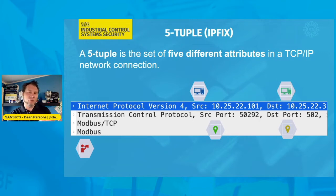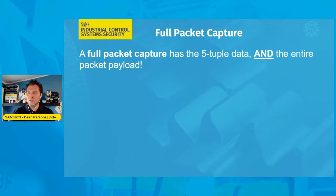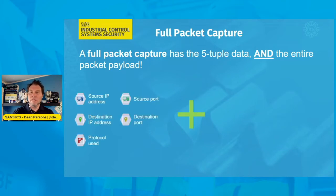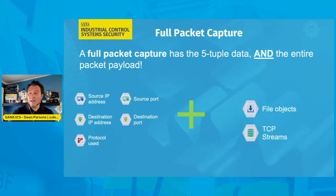If we shift from the 5-tuple to get more data and more visibility in the environment, we're shifting to the full packet capture. This includes your 5-tuple data we just described and the entire packet payload — everything on the network in those connections and conversations. More specifically, it will contain all five elements from the 5-tuple. In addition, if any files are on the network, it will find and capture those file objects as well. Beyond that, any conversations or streams that devices are communicating on, you can watch that entire communication with a TCP stream.